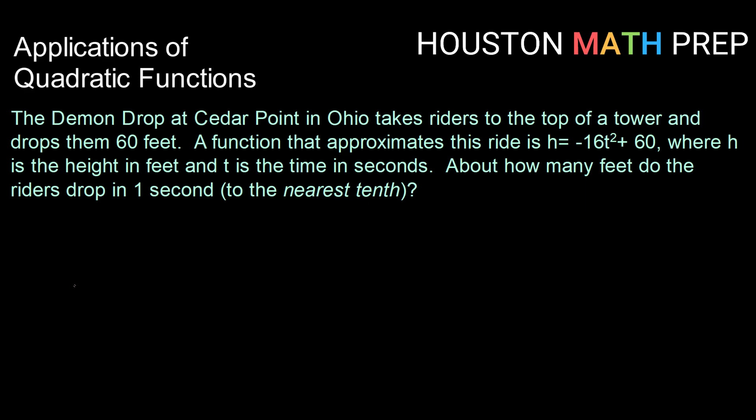So here's our first one. The Demon Drop at Cedar Point in Ohio takes riders to the top of a tower and drops them 60 feet. A function that approximates this ride is h = -16t² + 60, where h is the height in feet and t is the time in seconds. About how many feet do the riders drop in one second?